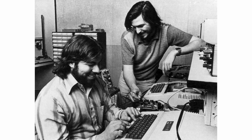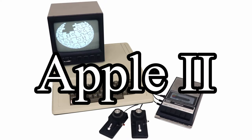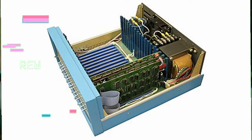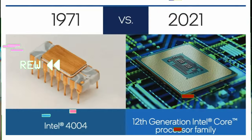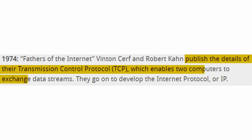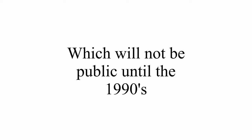Steve Jobs and Steve Wozniak developed the Apple II in 1977, which popularized personal computers. In 1974, two computer scientists, Vinton Cerf and Robert Kahn, published the details of TCP — Transmission Control Protocol — which enables the exchange of data between two systems. They also went on to develop the internet protocol. This is the start of the developing internet, which would not be public until the 1990s.